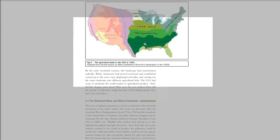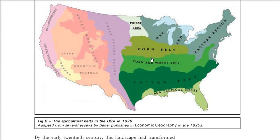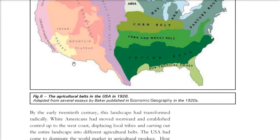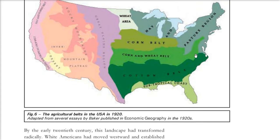By 1920, the agriculture belts in the USA had transformed significantly. This map shows the wheat area, corn belt, corn and wheat belt, pasture regions, cotton belt, subtropical coast, and desert regions. Mostly the wheat and grain producing regions are what we will discuss.